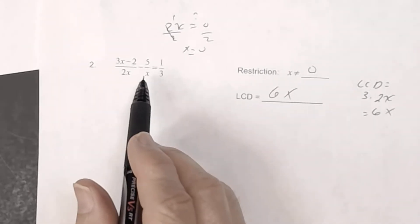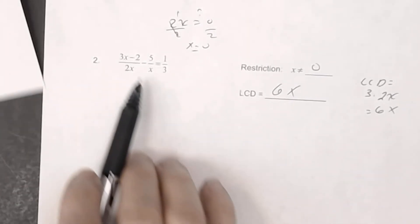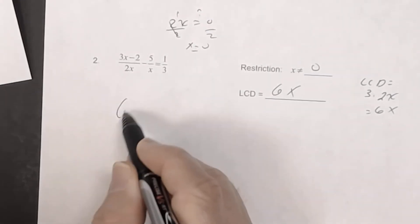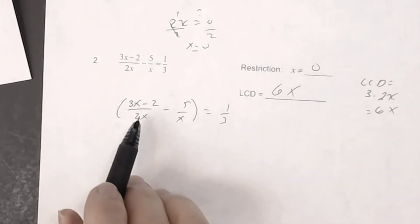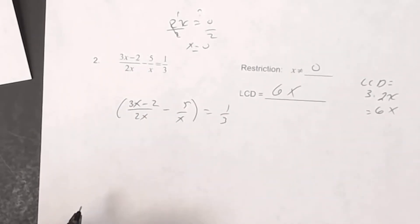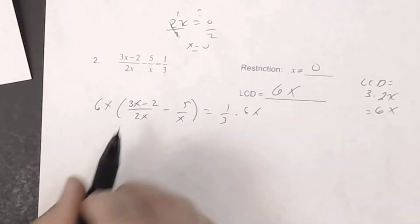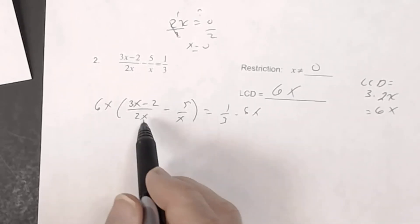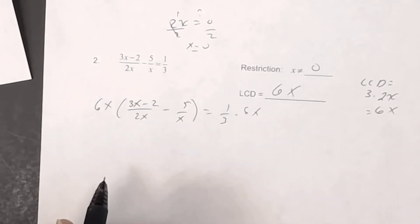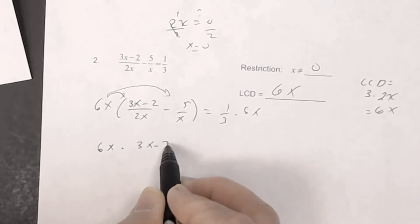Just like number one, since there are two rational expressions on the left side, put that side in parentheses: (3x minus 2)/(2x) minus 5/x equals 1/3. The next step is to multiply both sides by the LCD, 6x, to eliminate the denominators. Distribute first — don't reduce first, or you'll apply the wrong factor.